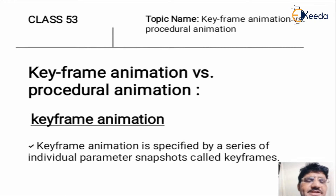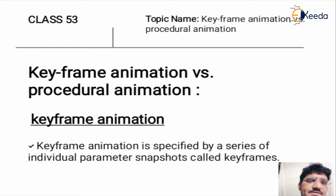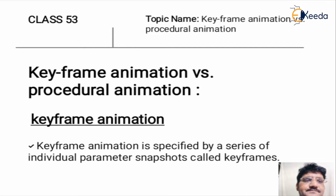Keyframe animation is specified by a series of individual parameters, snapshots which are called keyframes or frames. In keyframe animation there are two images: start frame and end frame.